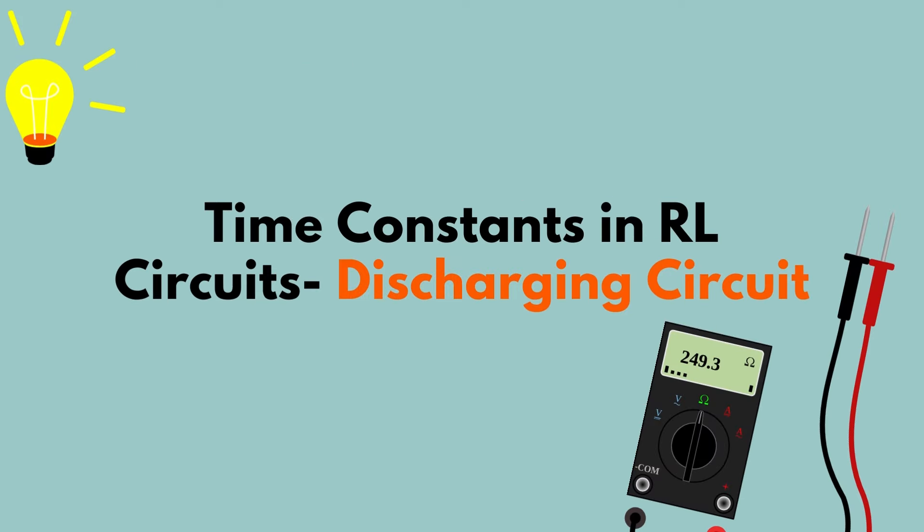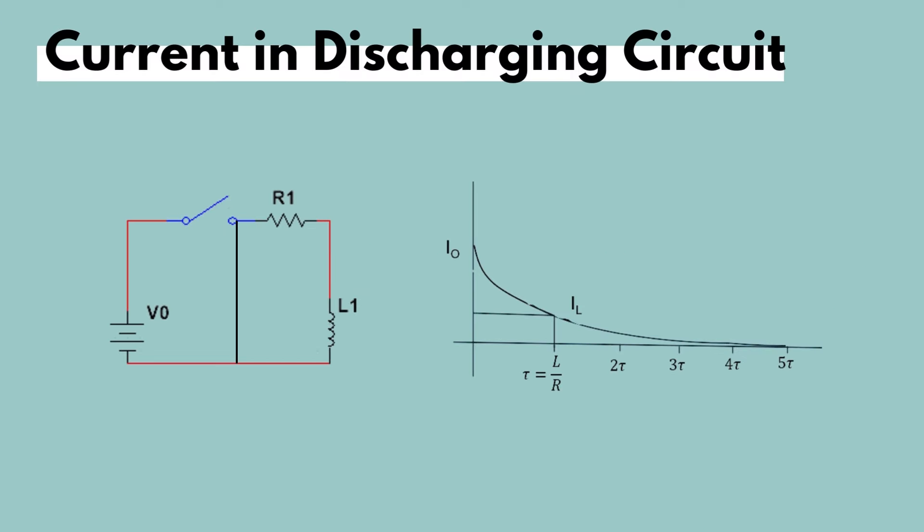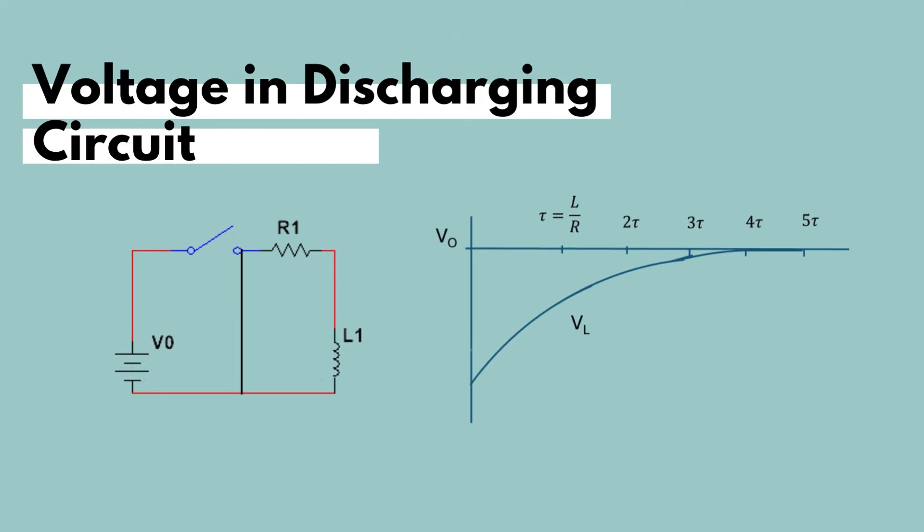Now let's look at a discharging RL circuit. When the switch is opened and the battery is cut off from the circuit, the current drops because of energy dissipation by the resistor. But this is also not instantaneous, since the inductor, according to Lenz's law, will also oppose the change of the decrease in current. Similarly, the voltage in a discharging circuit will continue to discharge until it reaches zero.